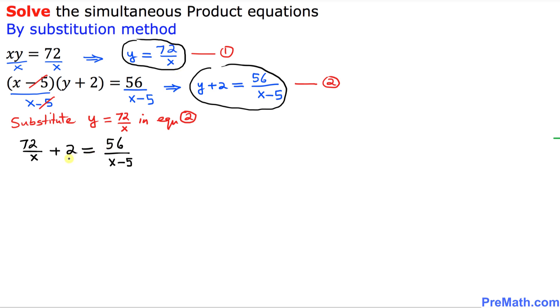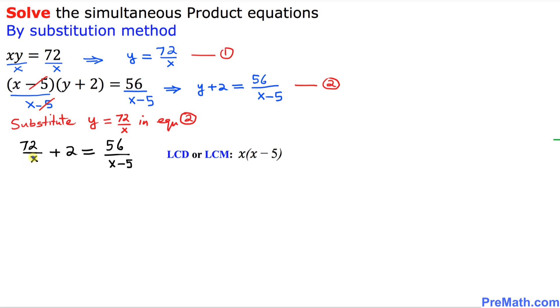So now, as you can see, we got a rational equation. So over here in this rational equation, we want to remove these fractions. And if we focus on the denominators x and x minus 5, our least common denominator, or sometimes we call it least common multiple, turns out to be x times x minus 5. Let me go ahead and multiply by this thing each and every term.